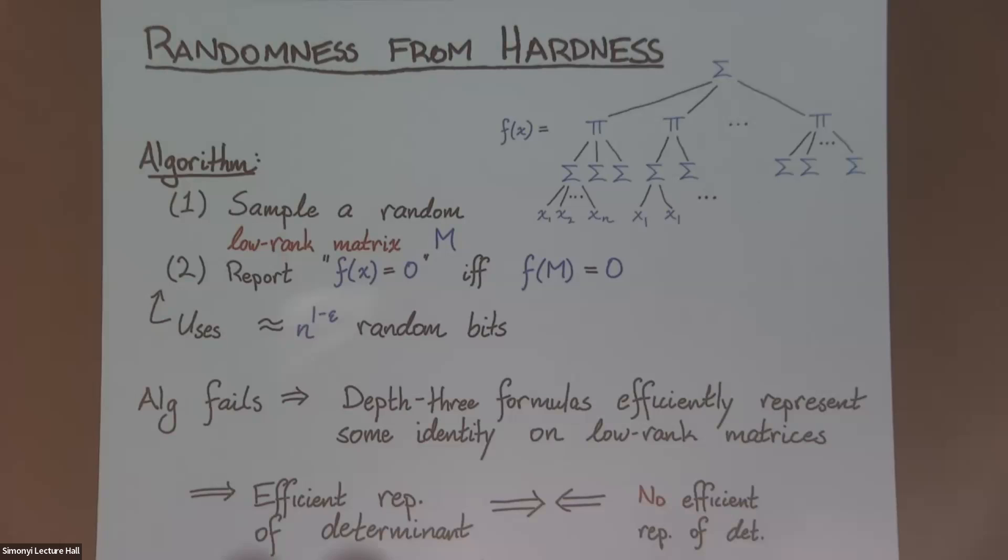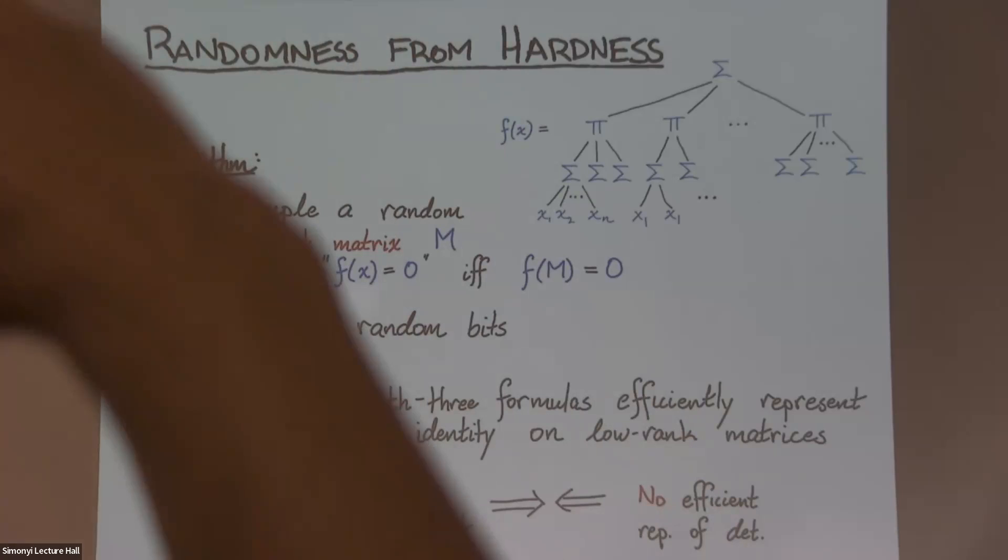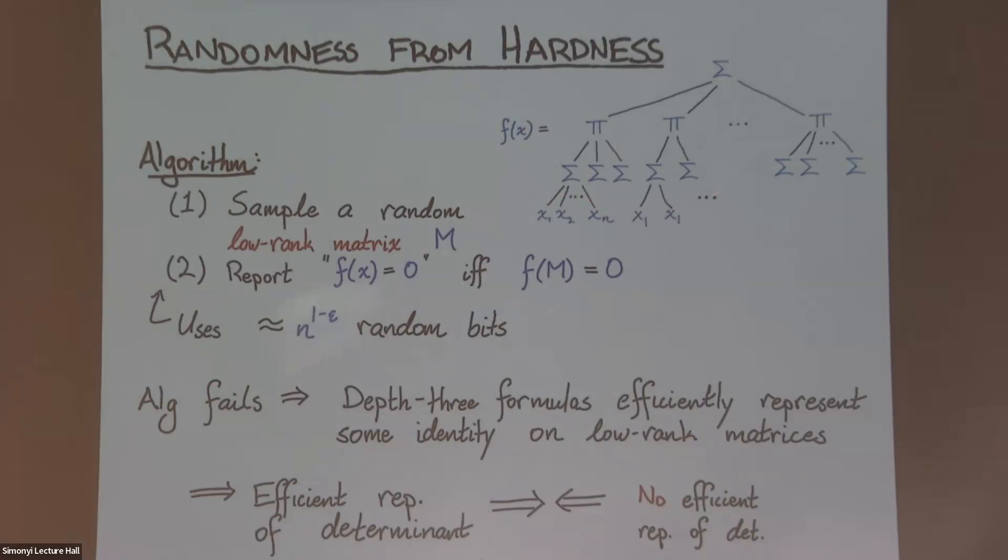Any other questions? Yeah. You said that the three-level evaluation of determinant is not doable efficiently. What exactly do you mean by efficient? So, if I want to compute an n-by-n determinant, I cannot write down a polynomial size depth-3 formula. It's a polynomial in n. That would compute that determinant. Any other comments, objections, questions? Avi? Perfect. All right. With that, let's thank the speaker. Thank you.